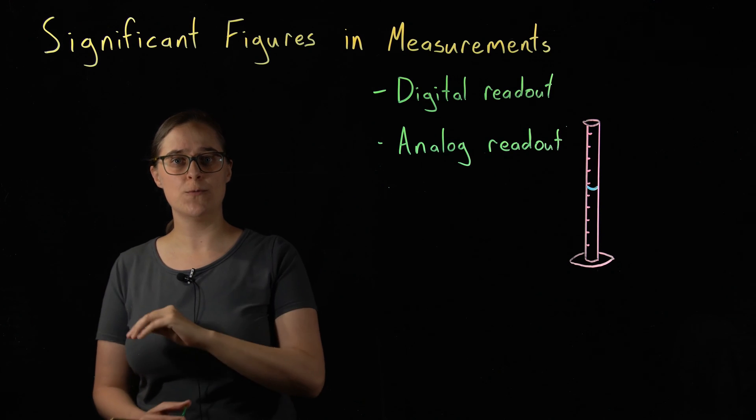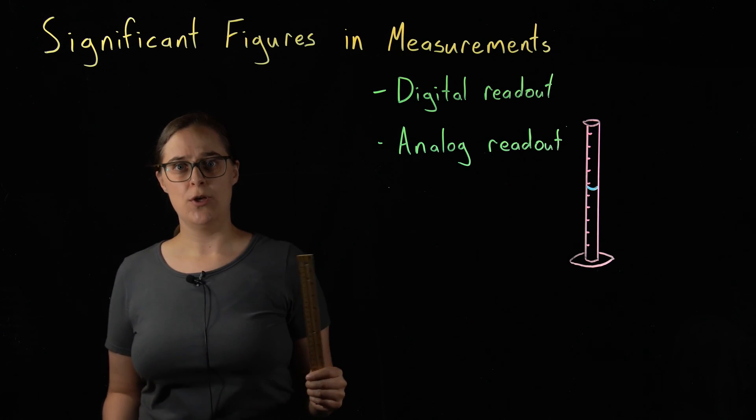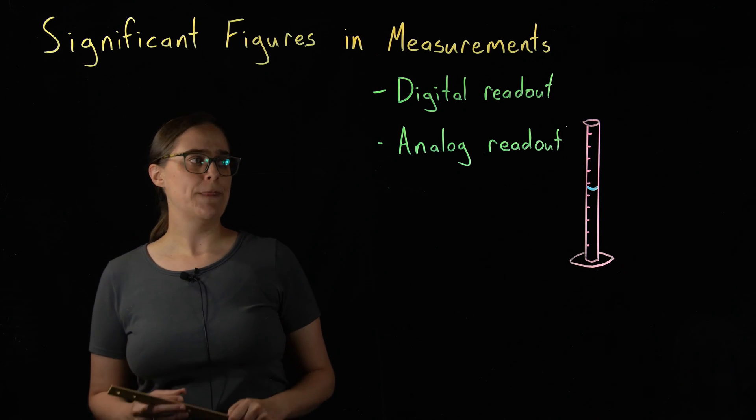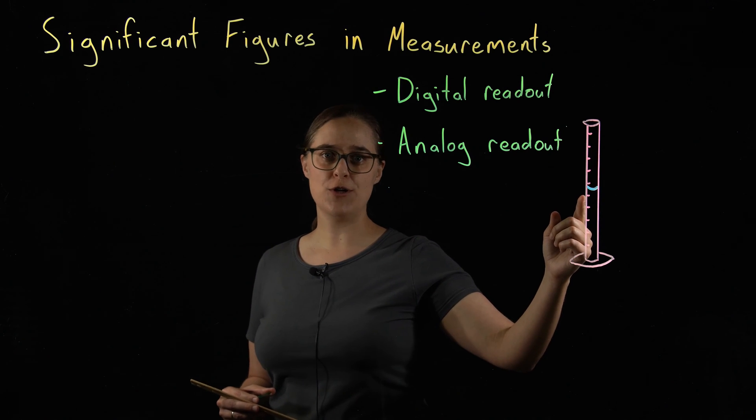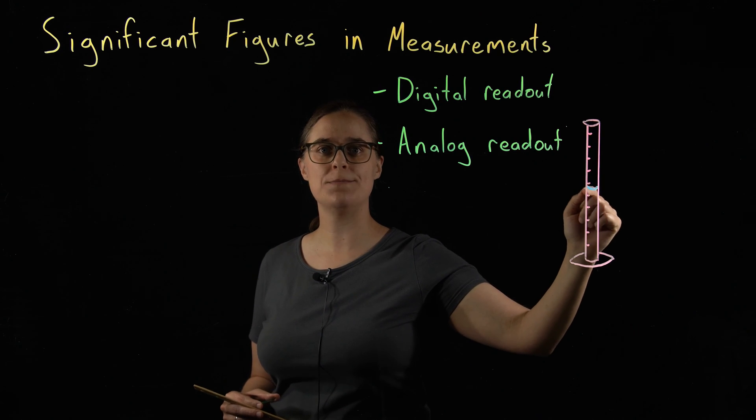These two rules will work for any instrument, whether it's something simple like a ruler, or whether it's the most expensive and advanced instrumentation we have ever created. I also want to go over the specific example of measuring the volume of a liquid in a graduated cylinder so that you know how to deal with the meniscus.